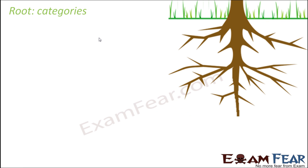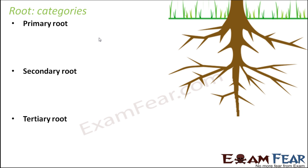Now let us talk about the categories of root. There are different varieties or different levels of roots — you can say a different hierarchy of roots: primary root, secondary root, and tertiary root. These are the various categories. By 'category' I mean the levels — the different levels at which roots exist.